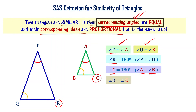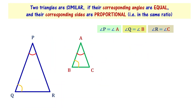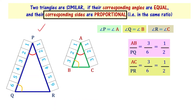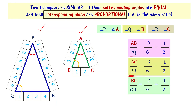Corresponding angles are confirmed equal. For corresponding sides, we already know two sides of these two triangles are in the same ratio — PQ and AB are corresponding sides, and PR and AC are another pair of corresponding sides, and AB by PQ equals AC by PR. Now measuring QR as 4 units and BC as 2 units, BC by QR also equals 1 by 2. So corresponding sides are all proportional.